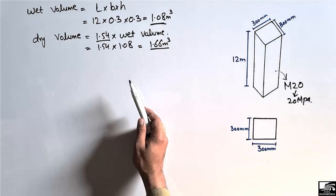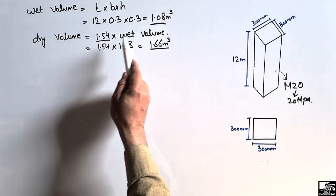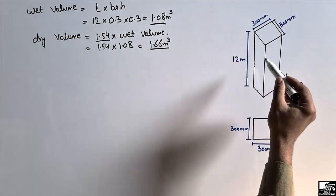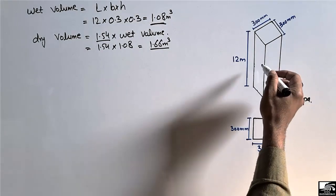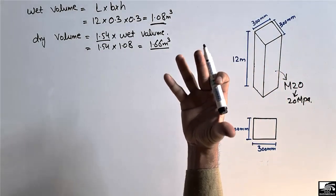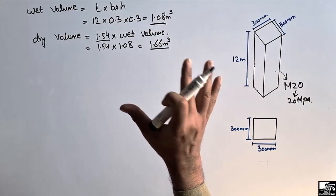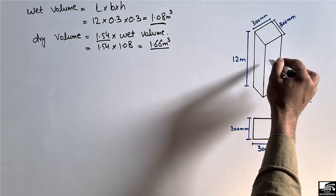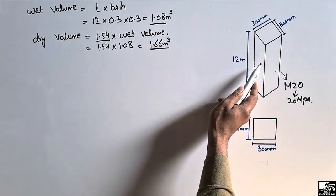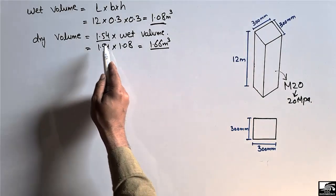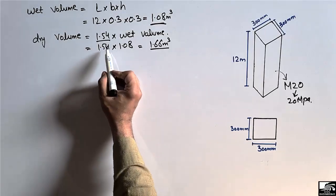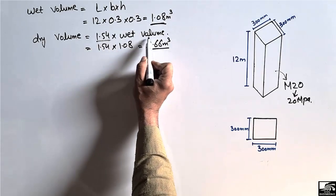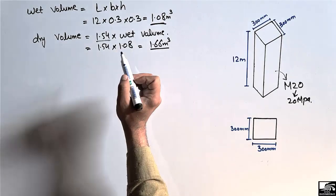The reason we multiply the wet volume by 1.54 is that in the wet volume, water is present inside the RCC column. Due to hydration processes, the water is absorbed and the volume of concrete decreases. Therefore, to find the dry volume, we multiply by the factor 1.54.